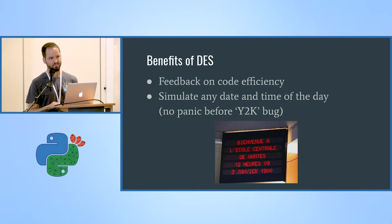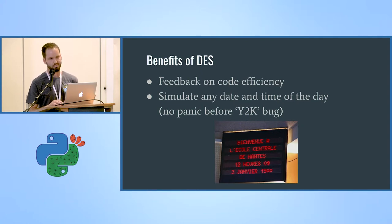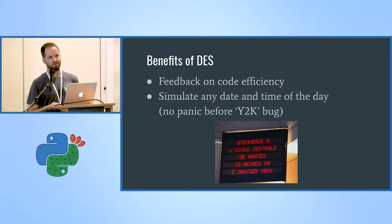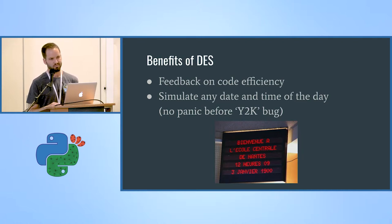For example, if it usually takes five minutes of simulation to run 10 minutes of real time and suddenly it starts taking six minutes, maybe we added some inefficient code. Another powerful benefit is that because the simulation has its own clock, it is really easy to change the time and day of the simulation and test the system on weekends, nights, and so on.